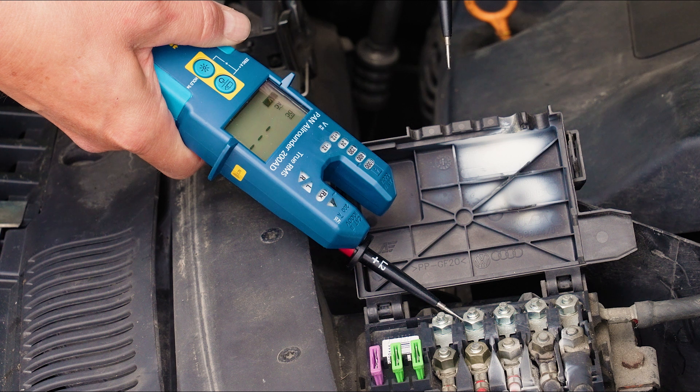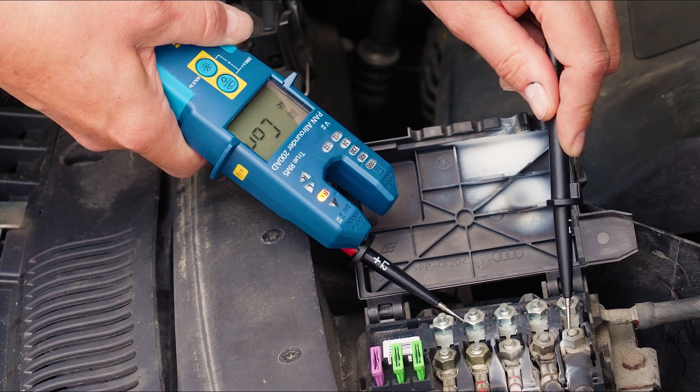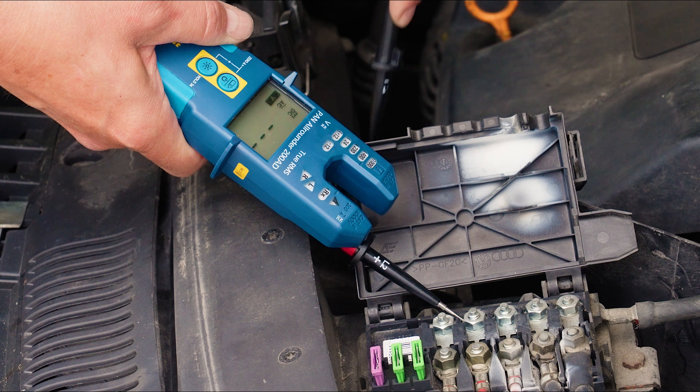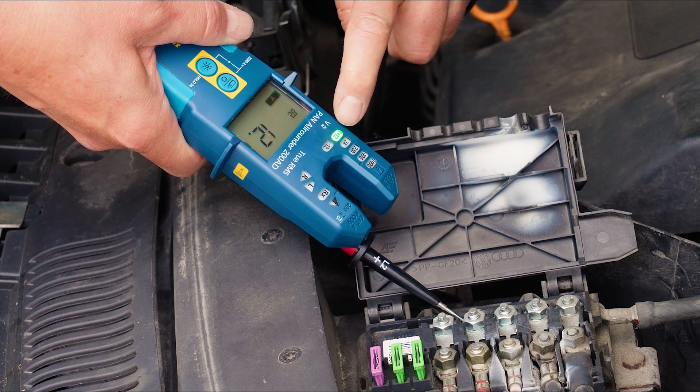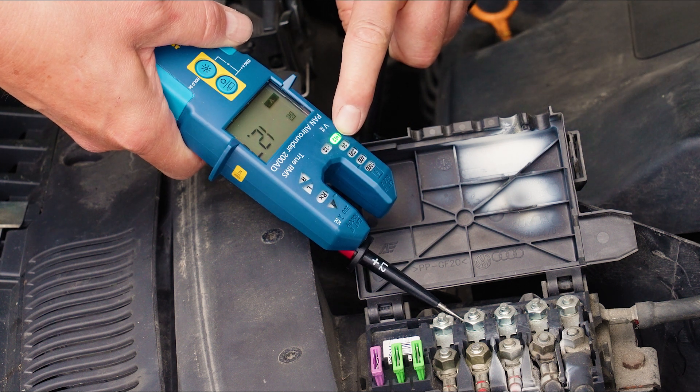Also for automotive applications, Pan Allrounder is very useful. As continuity tester and as voltage tester, thanks to its bright 12V LED.